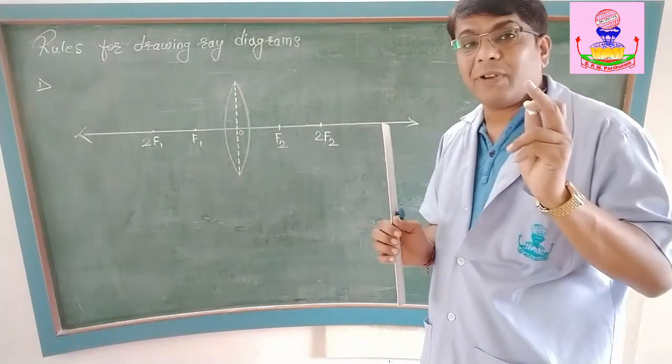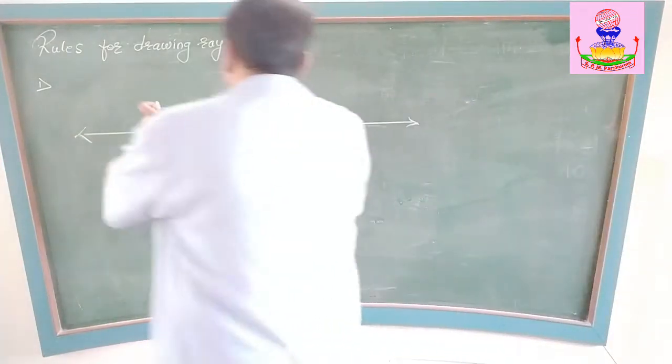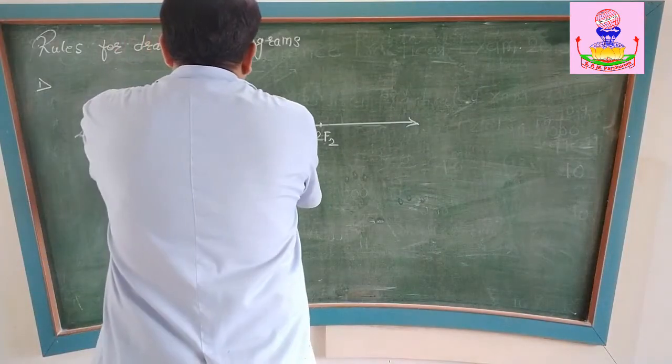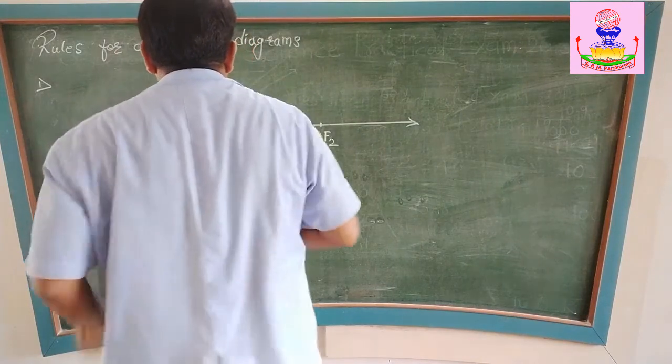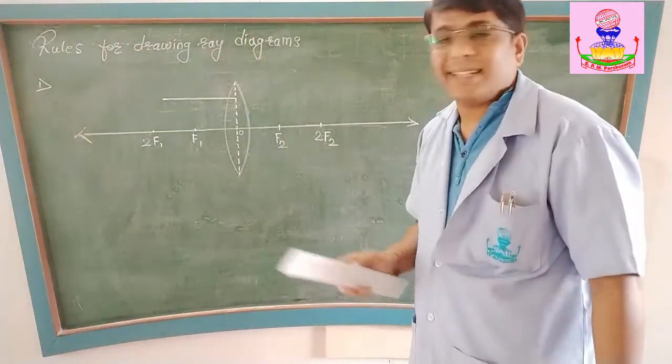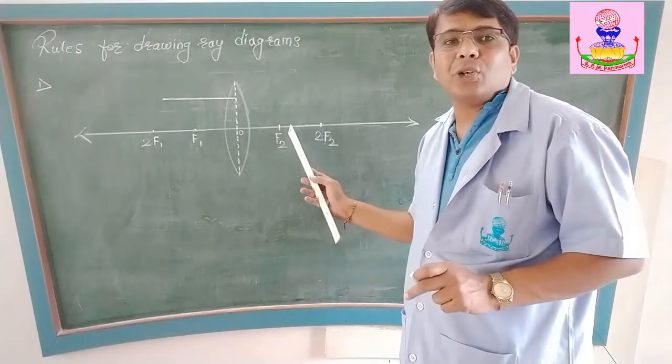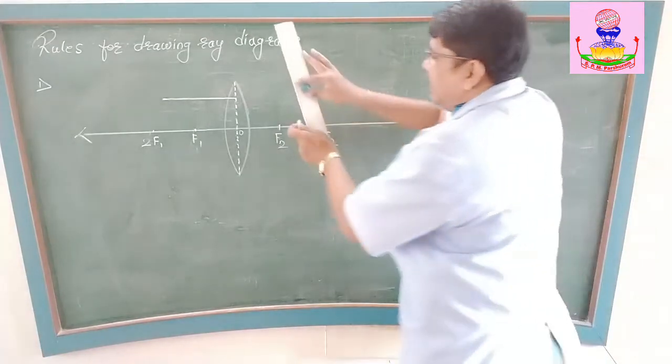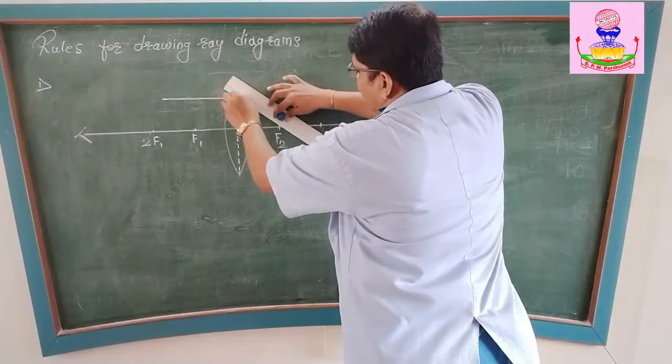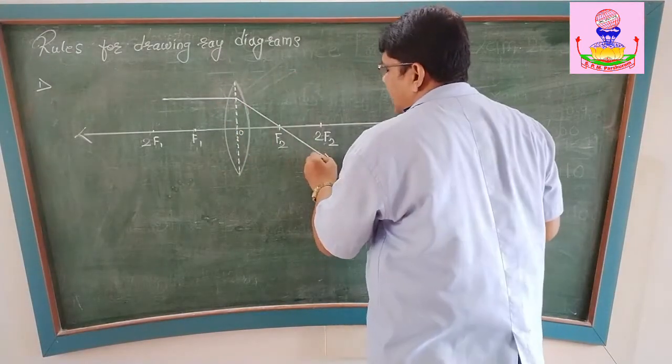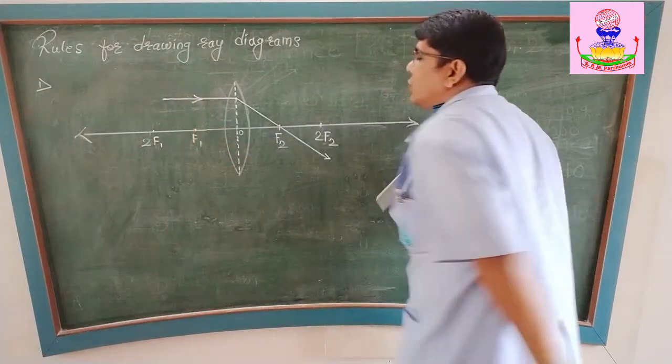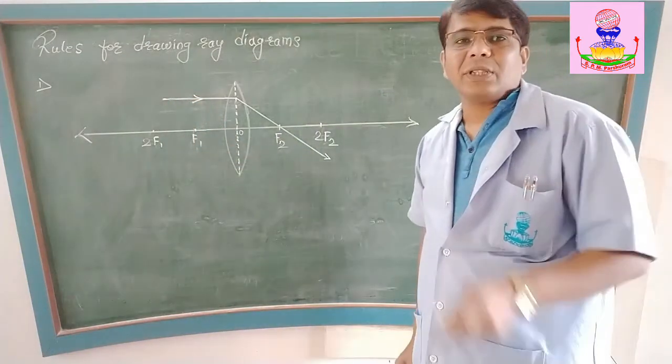First ray of light: that is parallel to the principal axis, incident on the convex lens. After refraction passes through focus. So it will go through this. This is my first ray of light that I am going to use. This is the first rule.